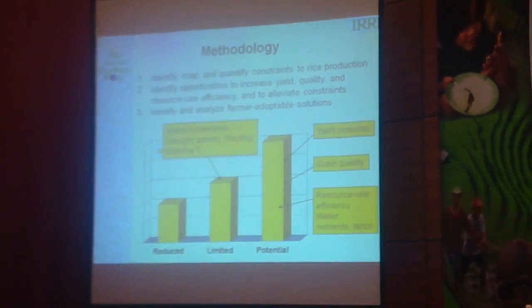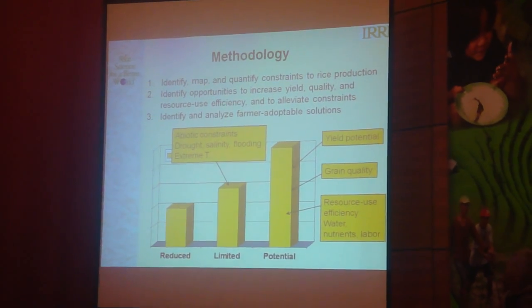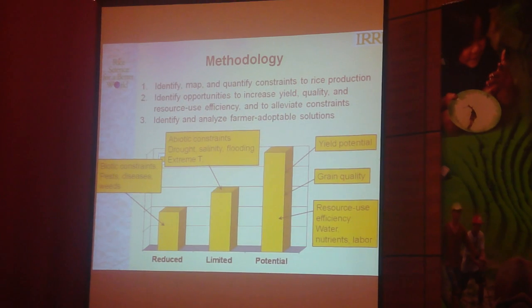We want to focus here on variety characteristics. Implicit in realizing a high yield is the efficiency of resources — water, nutrients, and labor are the ones we focus on. Limiting yields are then the abiotic constraints: drought, salinity, flooding, and extreme temperatures. Reducing yields are pest diseases and weeds.